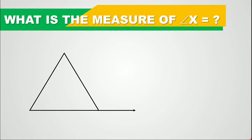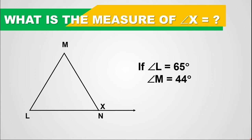Suppose we have a triangle L, M, N with an exterior angle X. If the measure of angle L equals 65 degrees and the measure of angle M equals 44 degrees, then what is the measure of angle X?